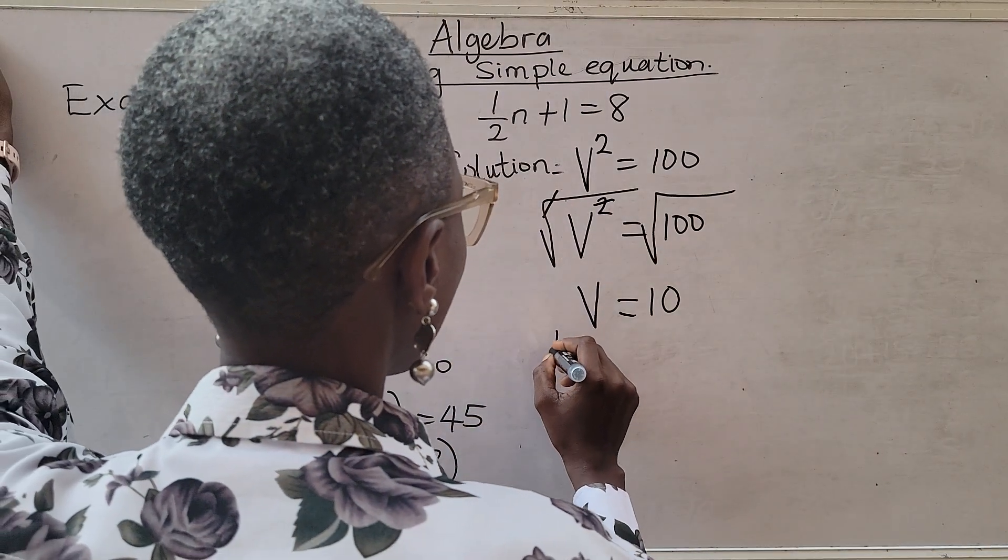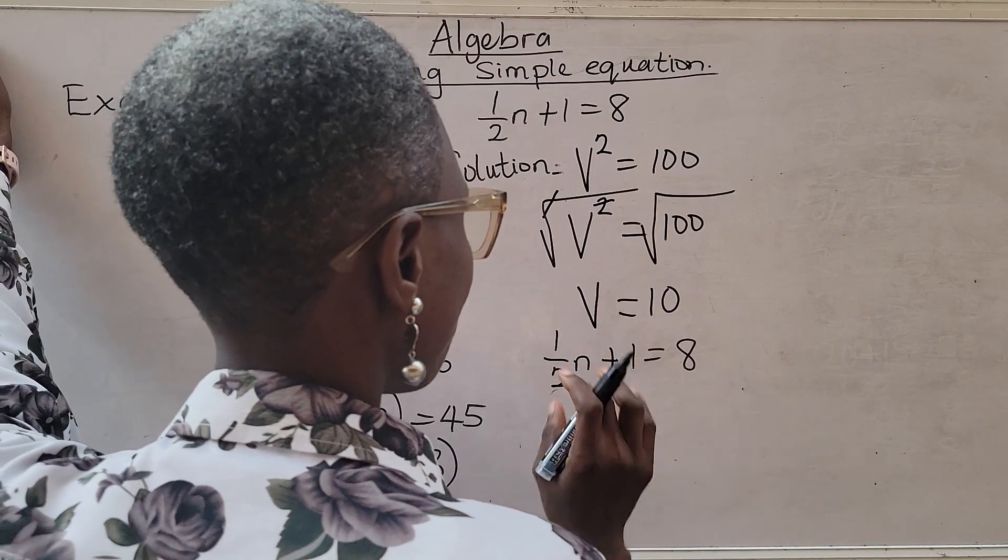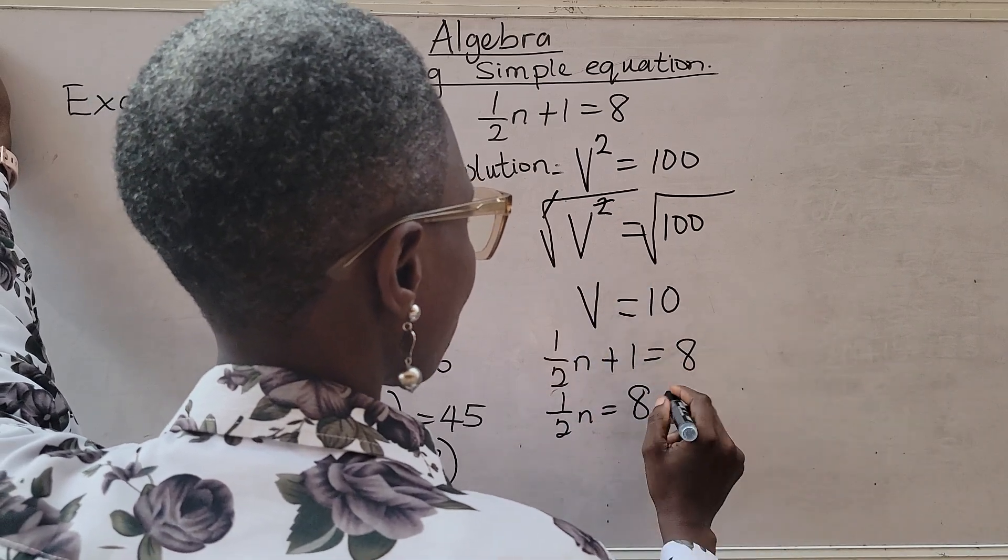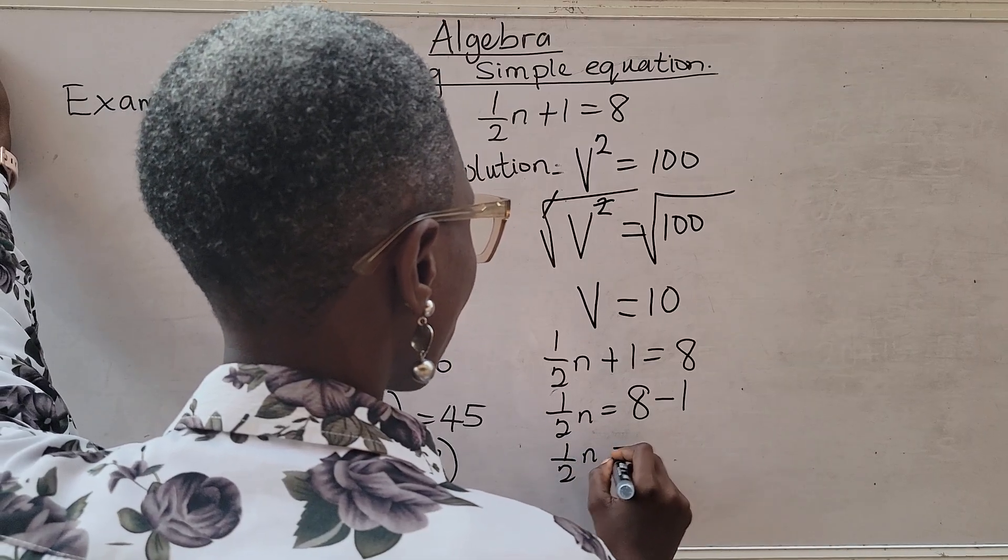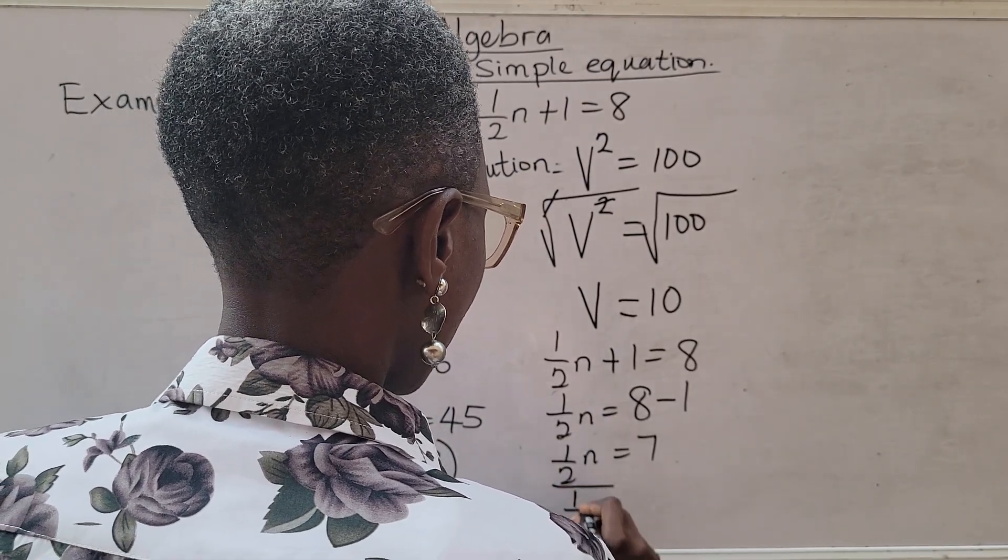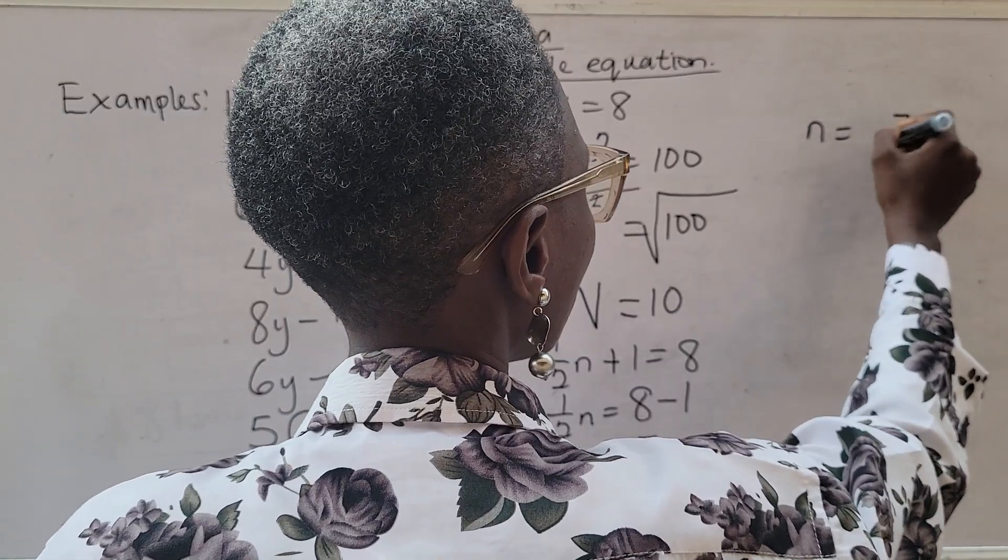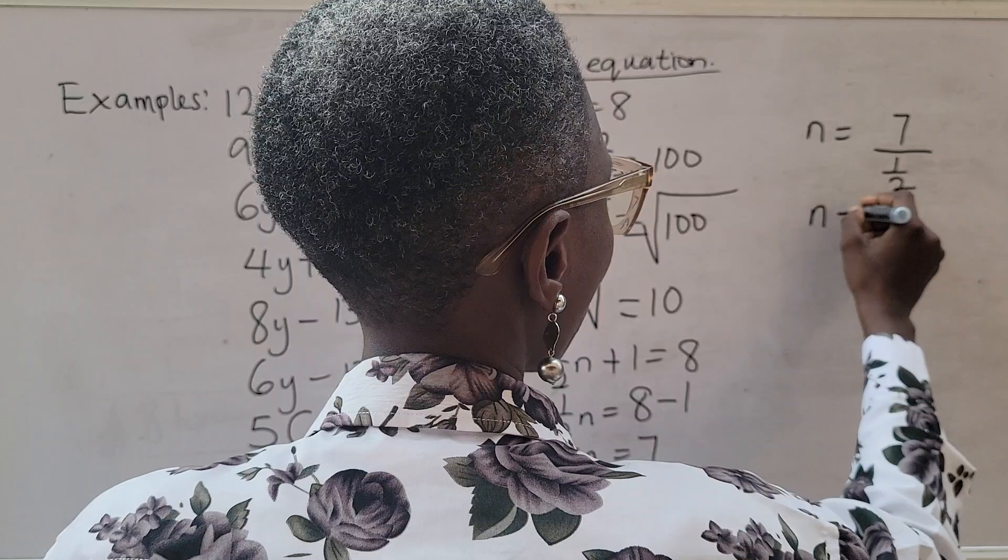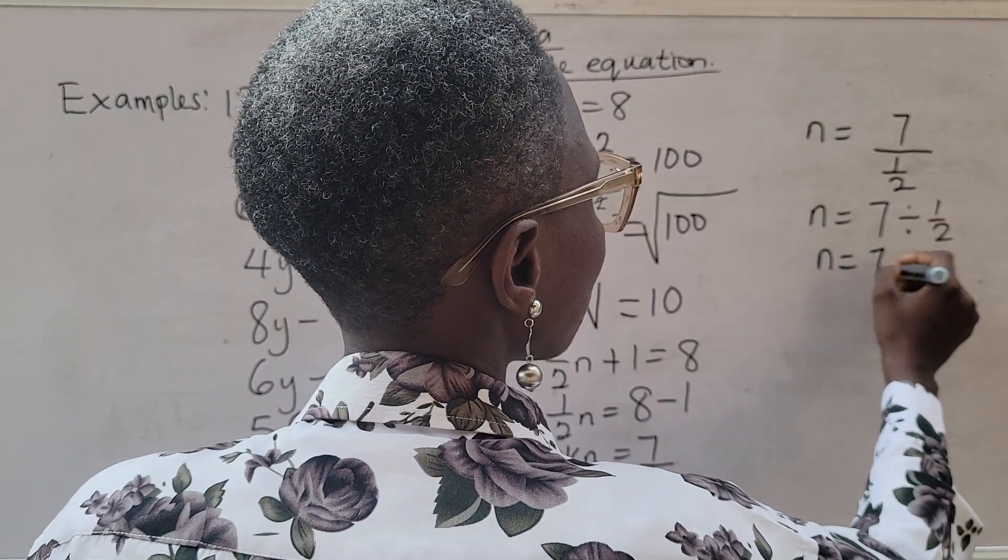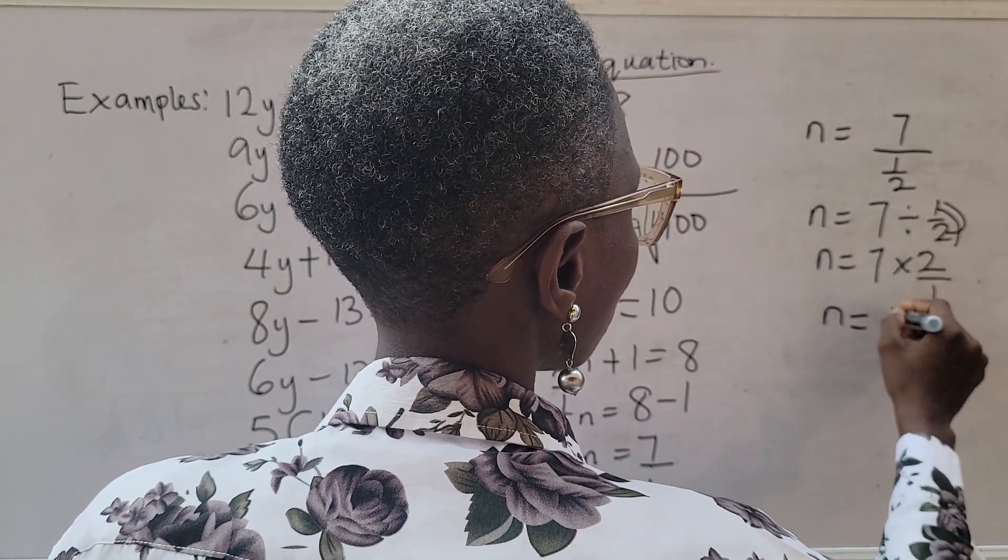The very last question I have on the board: half n plus 1 equal to 8. Now, collect like terms. Bring family together. Half n equal to 8 - plus 1 is going this way, minus 1. So we have half n equals 8 minus 1, 7. So you divide both sides by the coefficient of n. Now, this is going to be divided by this. This is canceling this. So n is equal to 7 divided by half. Turn it to the right way. 7 divided by 1 over 2. Then turn it around. 7 multiplied by 2 over 1. So n is equal to 7 times 2. We have 14.